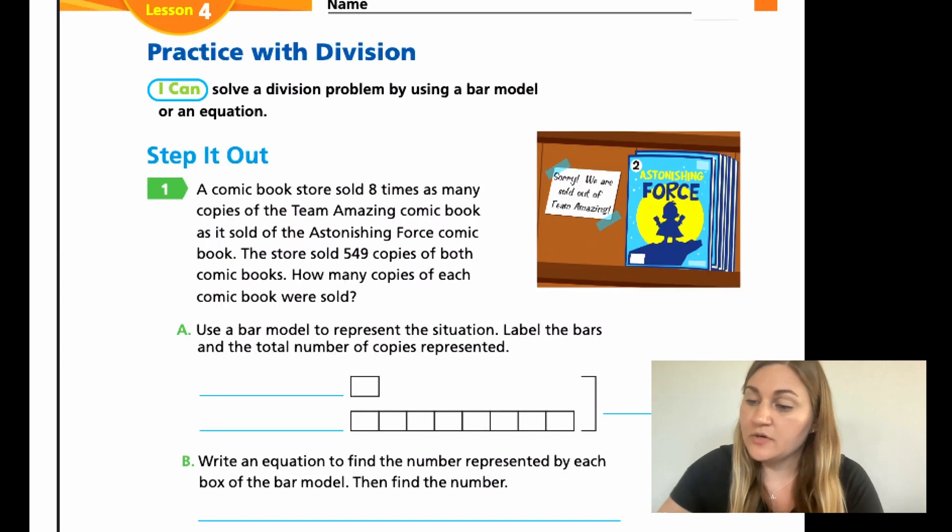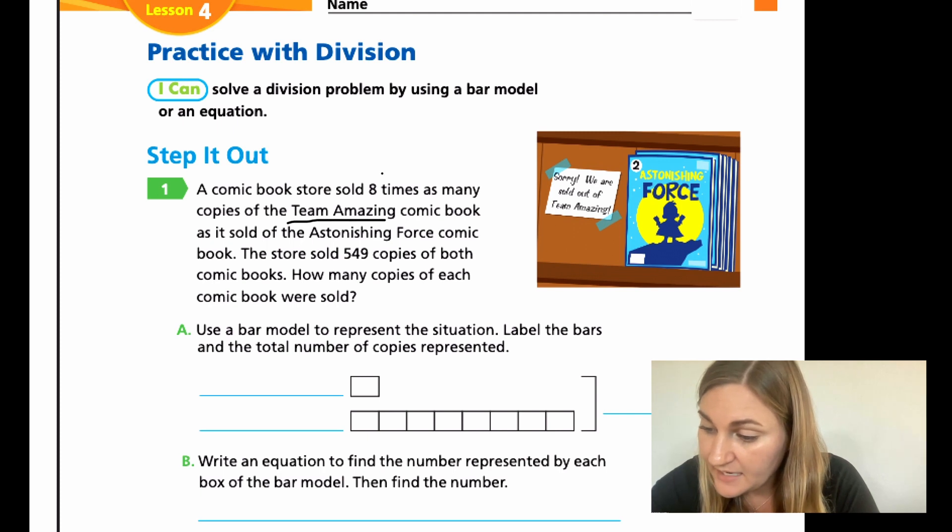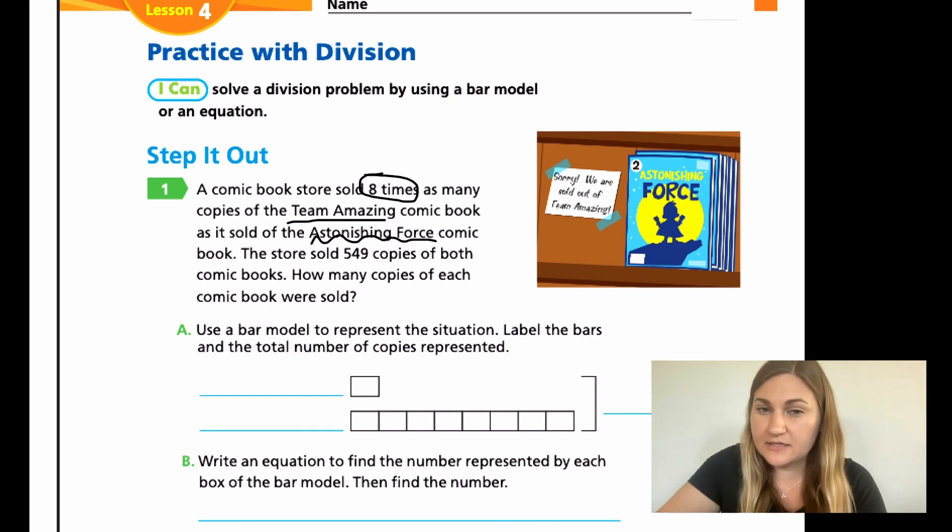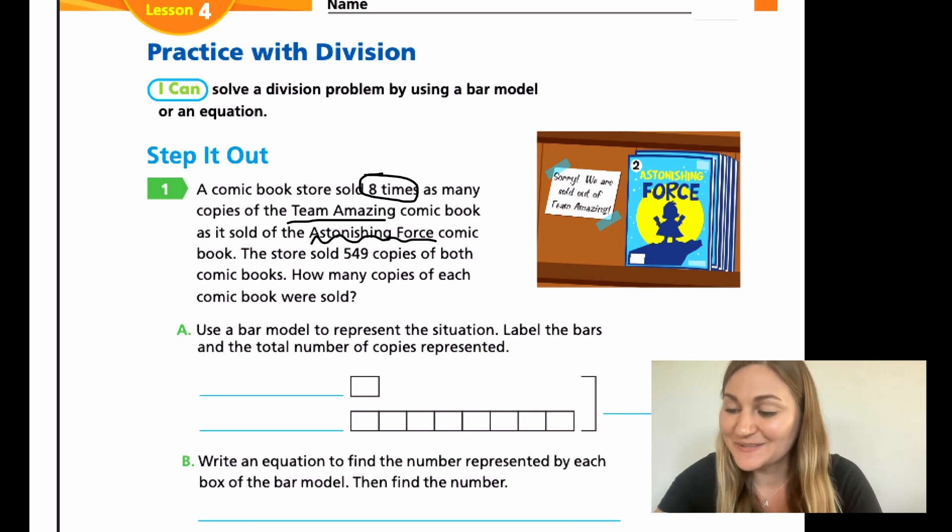Jumping into the lesson with Step It Out number one, it has a word problem that reads, a comic book store sold eight times as many copies of the Team Amazing comic book as it sold of the Astonishing Force comic book. The store sold 549 copies of both comic books. How many copies of each comic book were sold? So right now it says that Team Amazing had eight times as much as the Astonishing Force, but it doesn't tell us how much the Astonishing Force has. And it says that the store sold 549 copies.